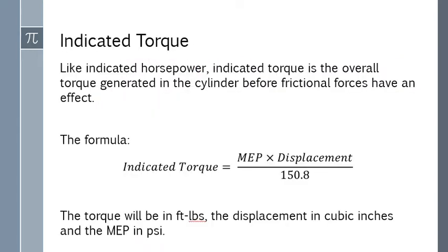All right, so that's the indicated horsepower. We also have another value, indicated torque. So that's a torque that the cylinder could generate to turn before the frictional forces have ruined everything for us.